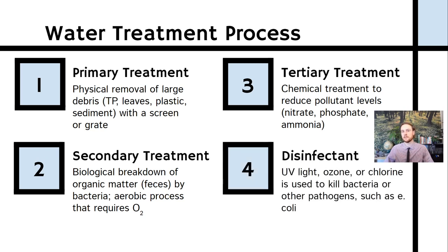Finally, we have disinfection. This is going to be UV light, chlorine, or ozone applied to the effluent — the discharge water from the plant — so that we're not adding bacteria like E. coli to the surface water body this water is discharged into, or leftover bacteria from secondary treatment.